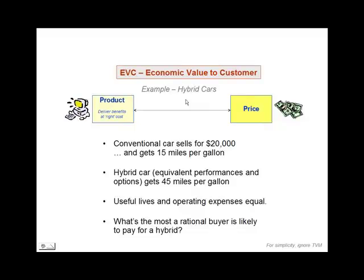We'll begin by treating it as a straight economics problem, and then later we'll factor in some of the intangible or softer variables. In our specific example, we're going to assume that our benchmark product is a conventional gas-fueled car — an ordinary gas engine that sells for $20,000 and gets about 15 miles per gallon. Our hybrid car is completely equivalent in terms of performance and options to the conventional, so think of it as a Civic hybrid that just has a battery in the back and a different drivetrain, and let's assume that it gets 45 miles per gallon.